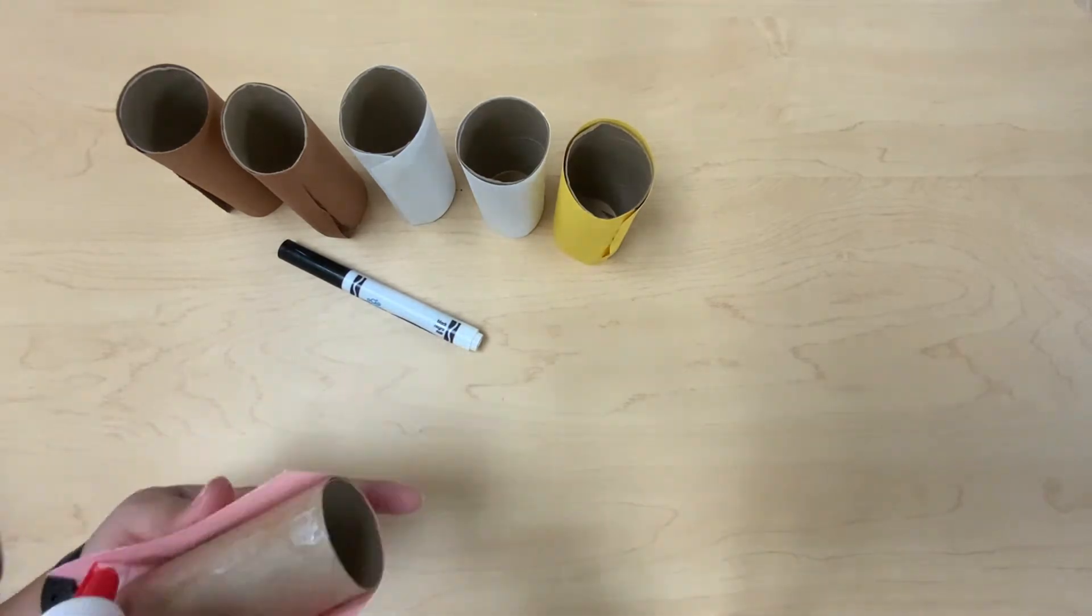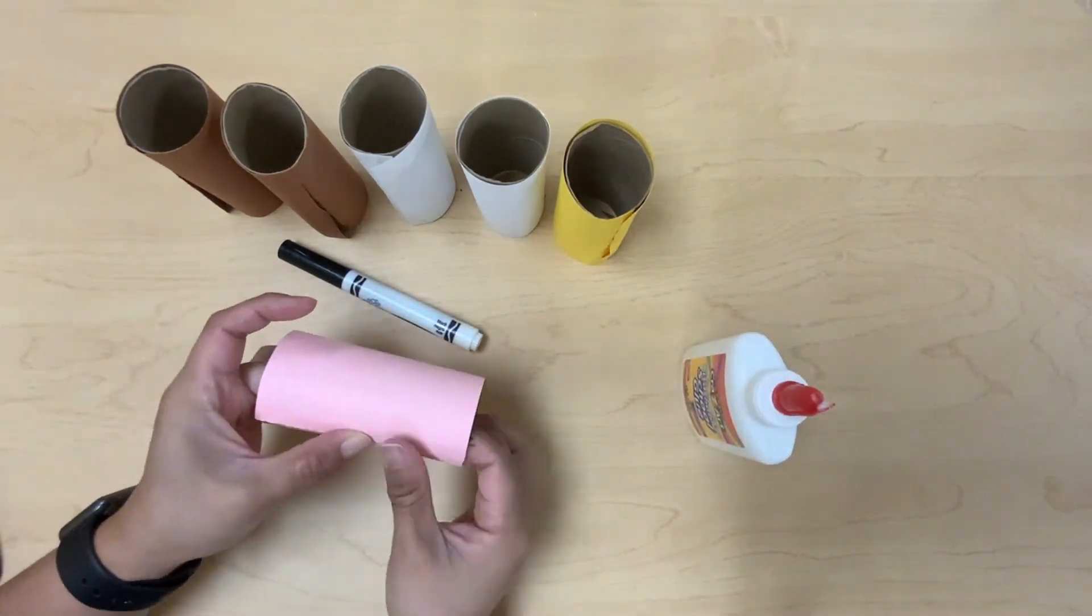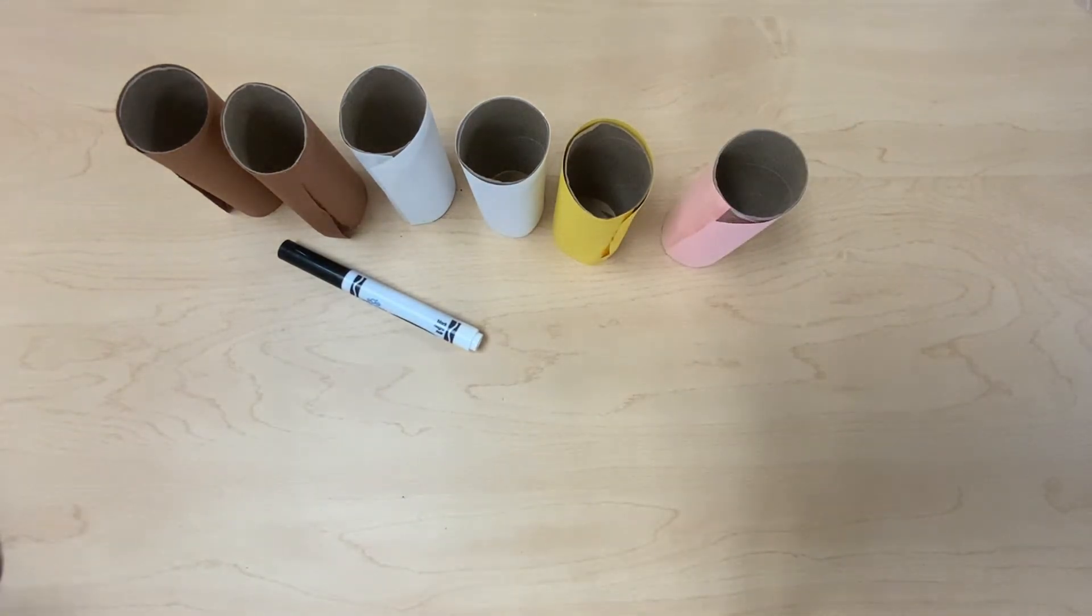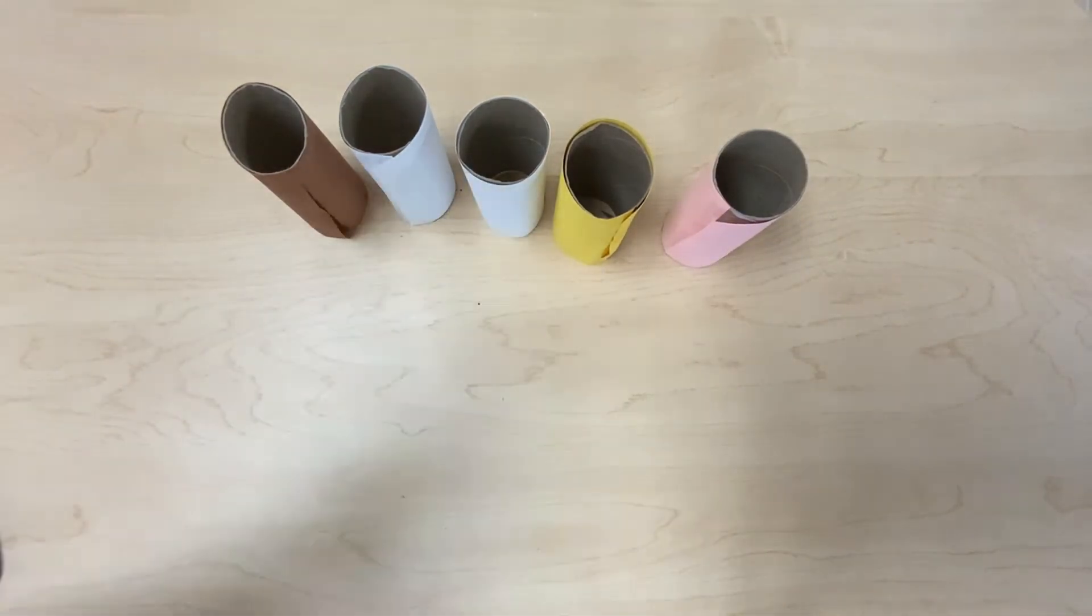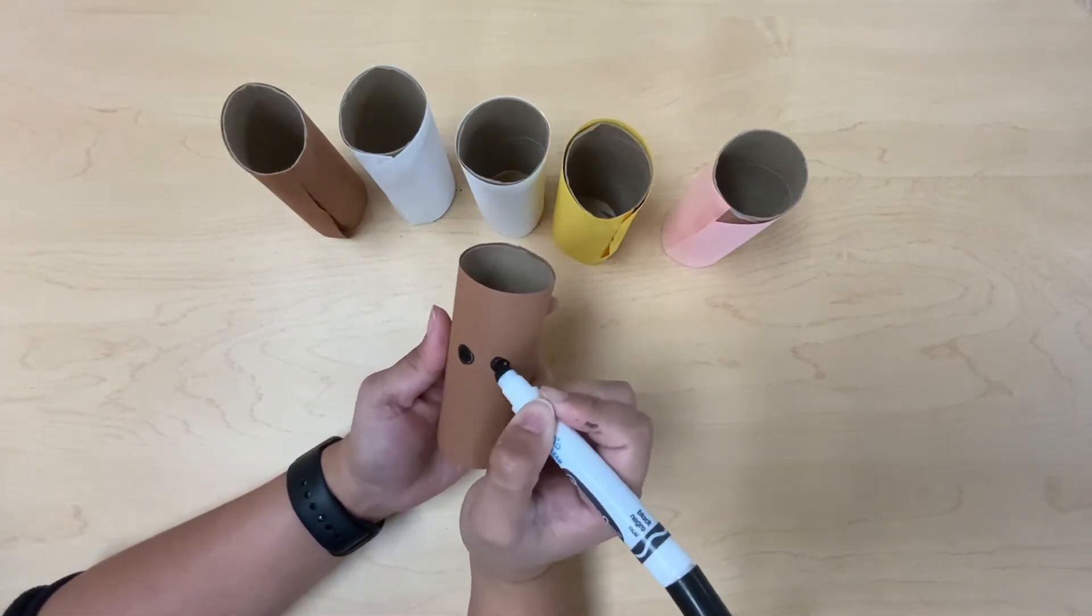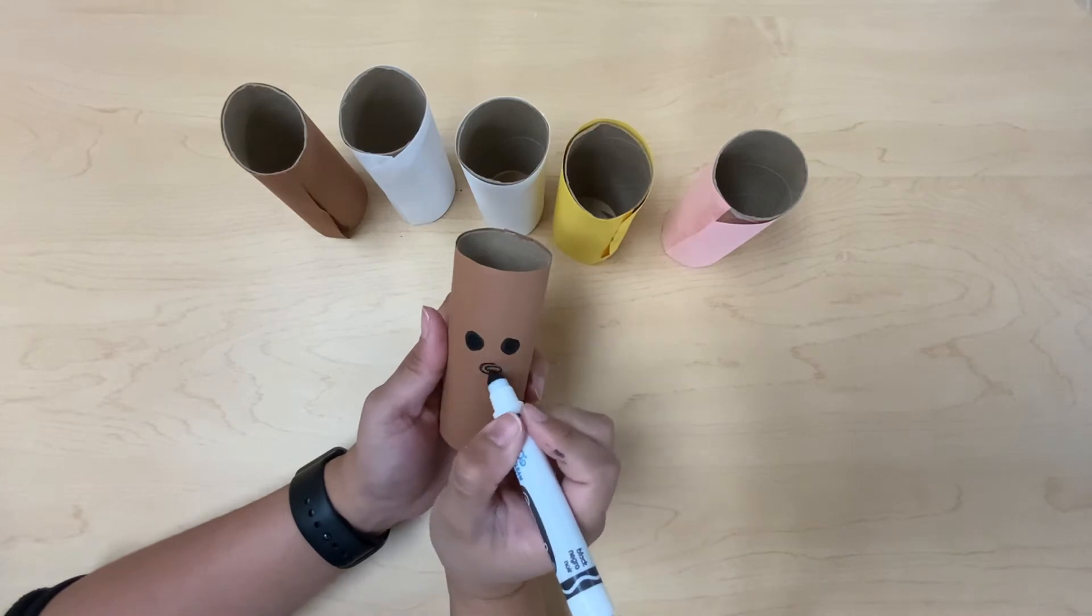Now that we're done putting construction paper on our toilet tubes, we're going to make some farm animals. The first one I'm making is a dog, and I'm adding his little tongue.